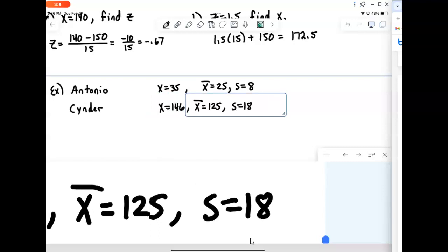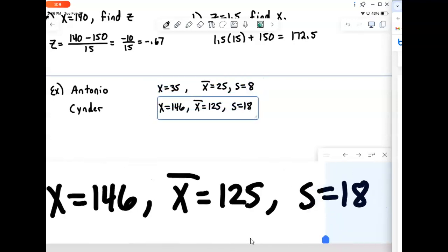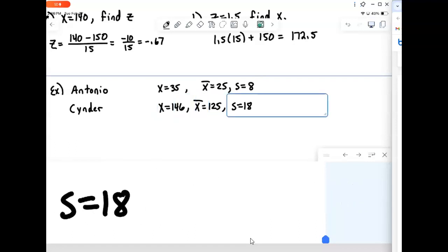But the average score on Cinder's test was 125 with a standard deviation of 18. And so both did better than average. We can see that. Antonio did 10 better than his average and Cinder did 21 better than their average. But even that, the amount better, still doesn't really put things into perspective.